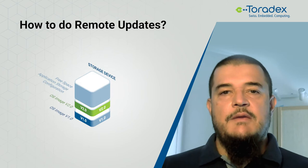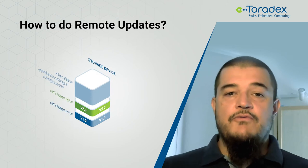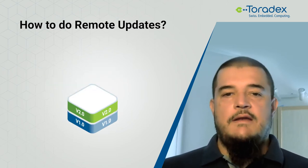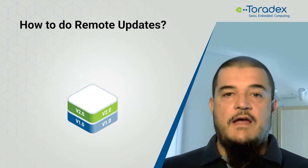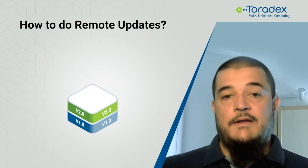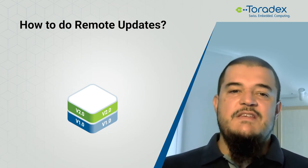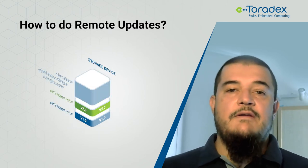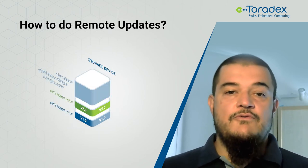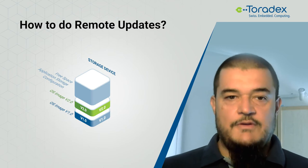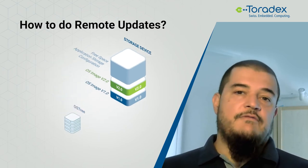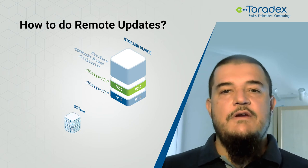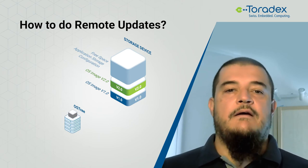This can be done by keeping two full images of your software. You update one and if something goes wrong, you still have the other one. But this means having to use double the storage and having at most two versions of your system on the device.